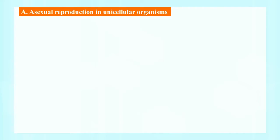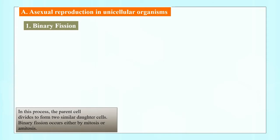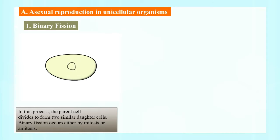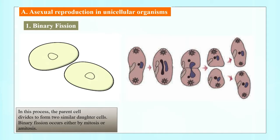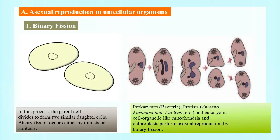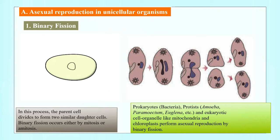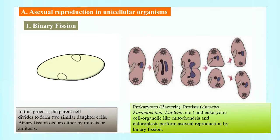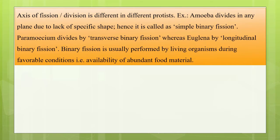First we are talking about unicellular organisms — that is binary fission. In binary fission, the parent cell divides to form two similar daughter cells. Binary fission occurs either by mitosis or amitosis. You can see images of prokaryotic bacteria, protists, amoeba, paramecium, and euglena. Cell organelles like mitochondria and chloroplasts also perform asexual reproduction by binary fission. The axis of fission is different in different organisms depending upon the organism.